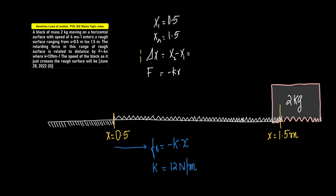So now we are also being given F which is equal to minus kx. The moment you see delta x and F, what should come into your mind? Work done by this retarding force will be equal to F retarding delta x.